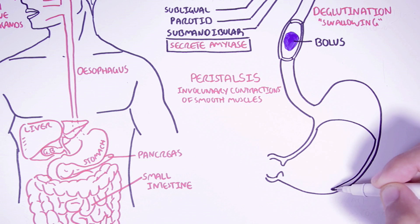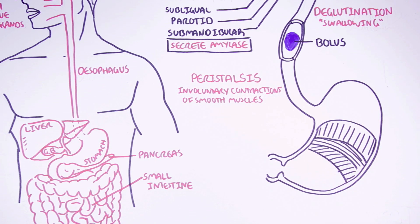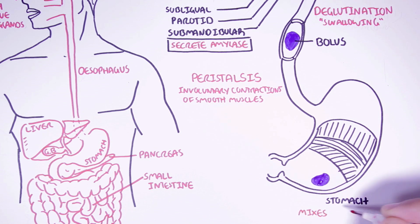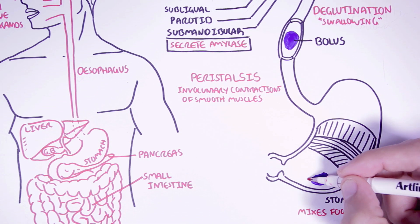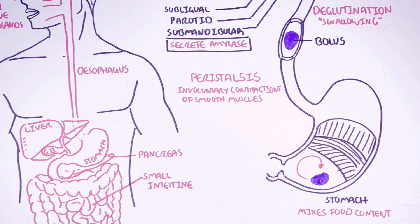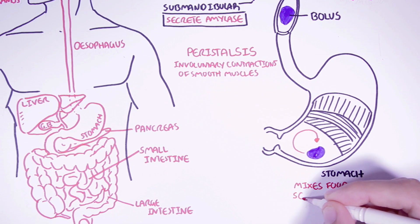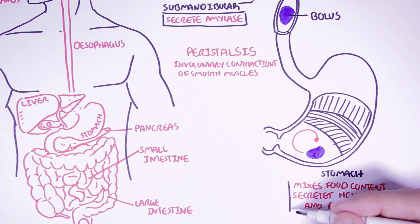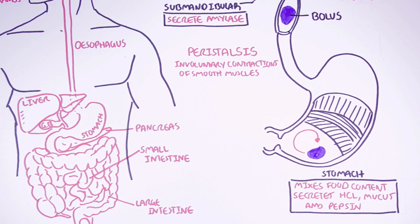And so the bolus will eventually enter the stomach. The stomach will temporarily store and churn the bolus. The stomach is able to churn the bolus because it has three layers of muscle. The stomach cells also secrete chemicals and enzymes such as hydrochloric acid that helps break down the food, kill bacteria, and stimulate enzyme secretions.